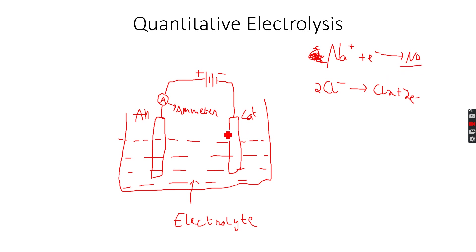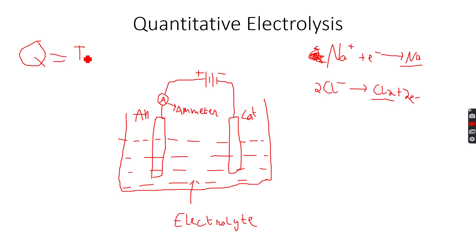Now, what if I want to measure the amount of sodium deposited at the cathode, or the amount of chlorine bubbled off at the anode, in a specific amount of time? For measuring time I use a stopwatch, and for measuring current I use an ammeter. Then I calculate the charge Q that has passed overall. Q = It, where Q is the total charge, I is the current from the ammeter, and t is the time from the stopwatch.